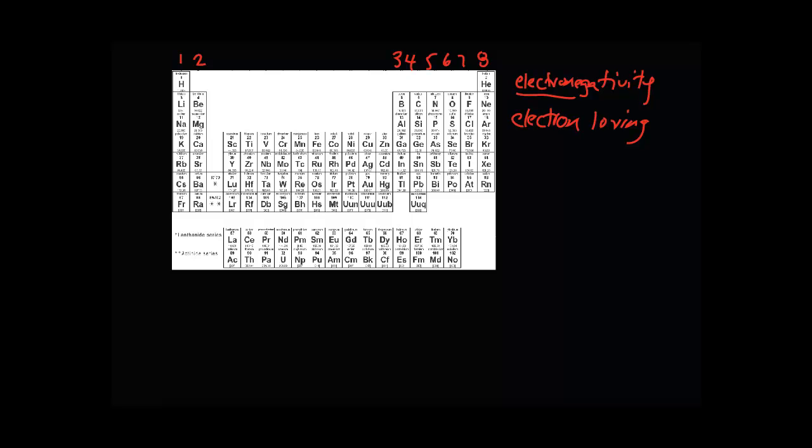This ties into electronegativity because as you go from the bottom left to the top right, electronegativity increases. Since it's more electron loving in this corner, it's going to be much more difficult for some other element to come along and pluck off any of these electrons. This makes sense because these elements want to gain electrons, not lose them.